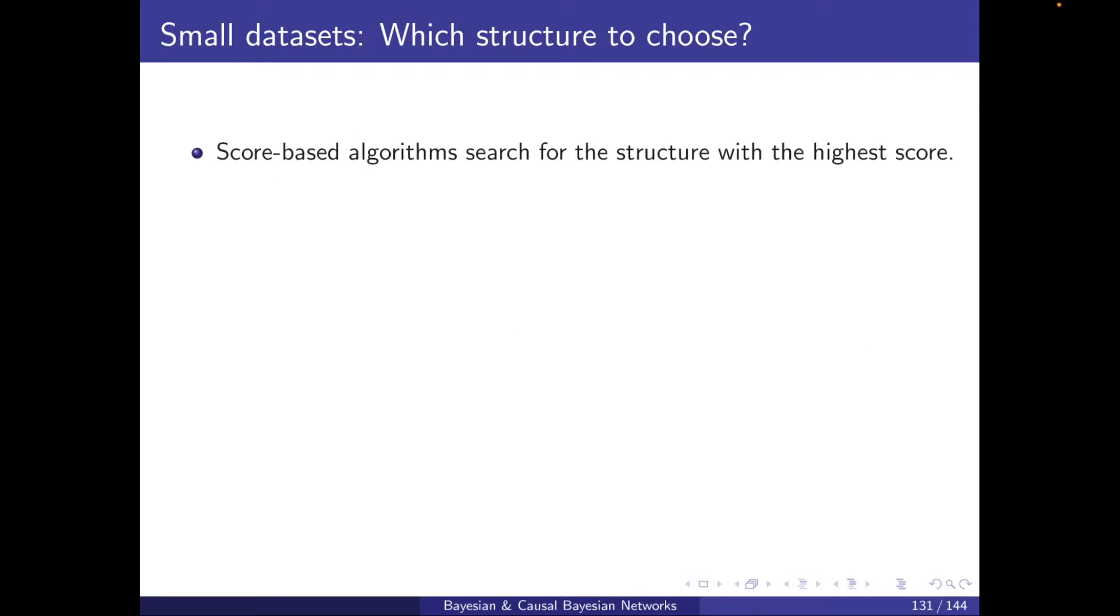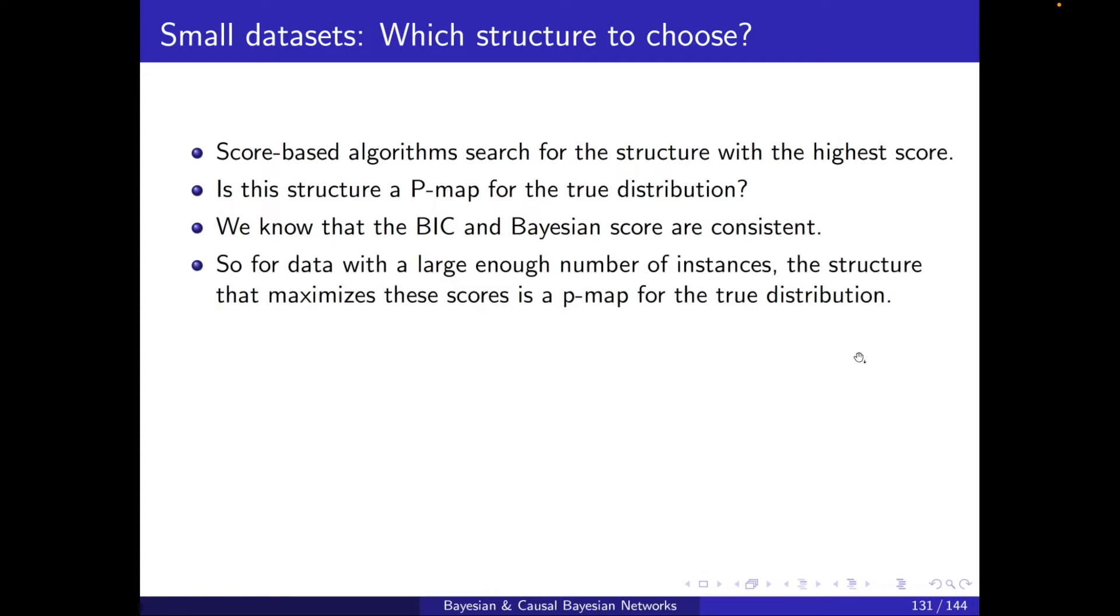Score-based algorithms search for the structure with the high score. Is this structure a p-map for the true distribution? We know that the BIC and Bayesian score are consistent, and this implies that for data with a large enough number of instances, the structure that maximizes the scores is a p-map for the true distribution. We already saw this.